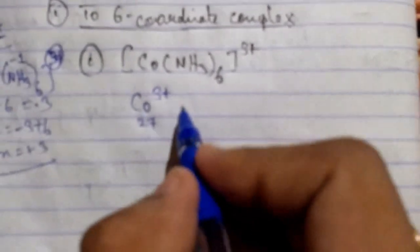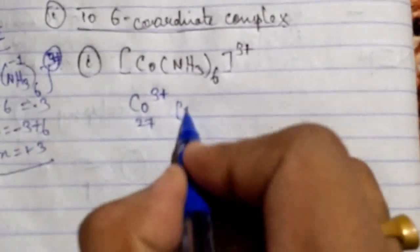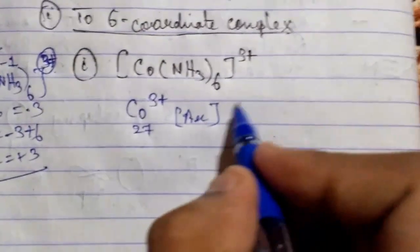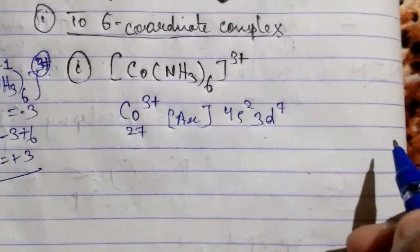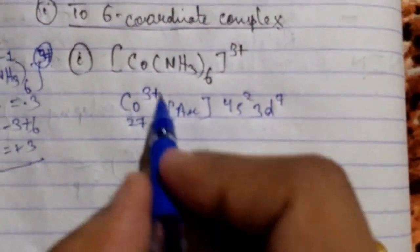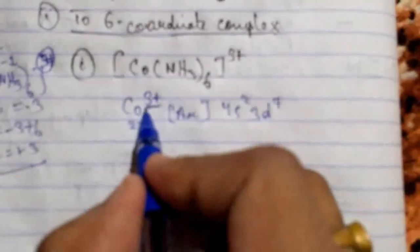Cobalt's atomic number is 27. What is the electronic configuration? The electronic configuration will be 4s² 3d⁷ for neutral Co. With 3+ oxidation state, we remove 3 electrons.